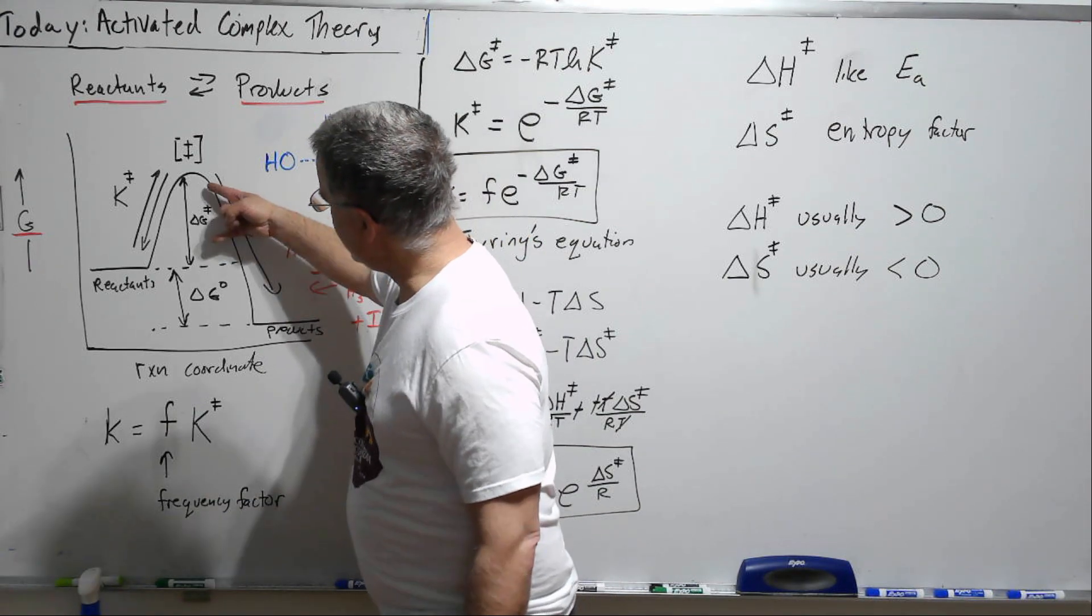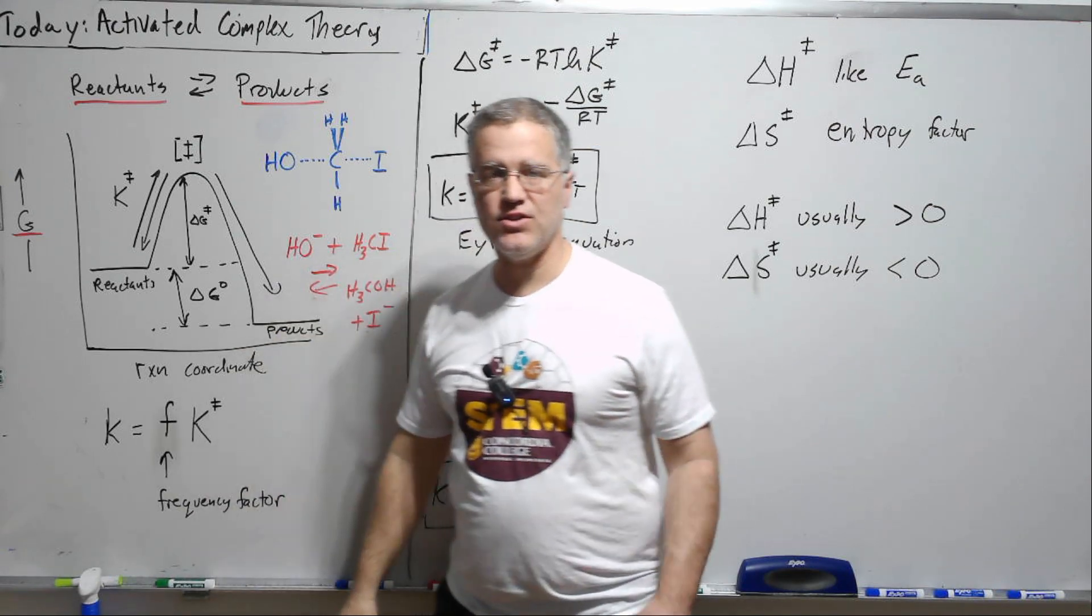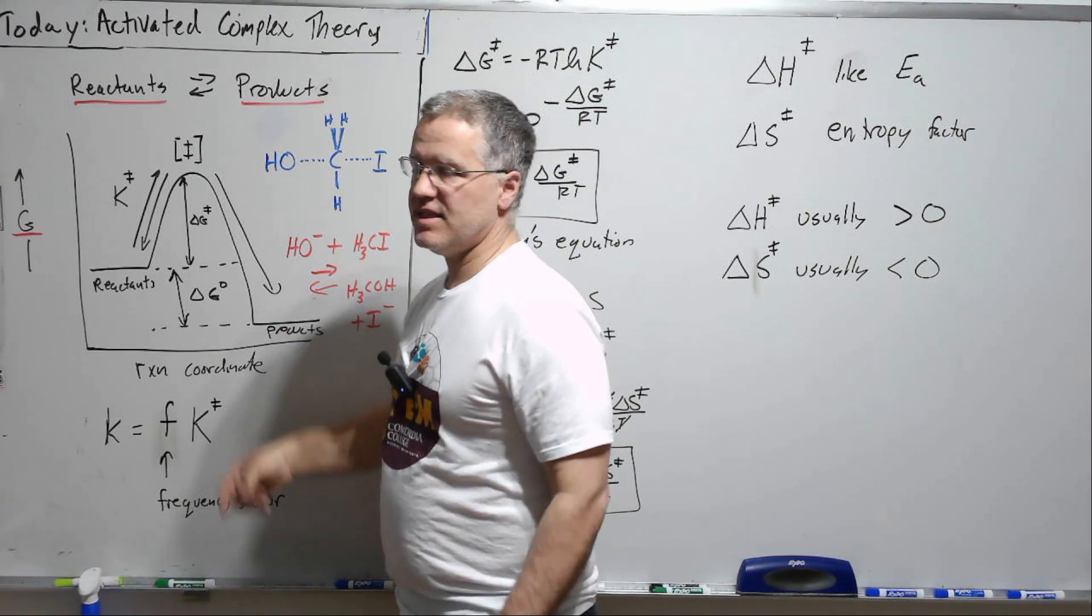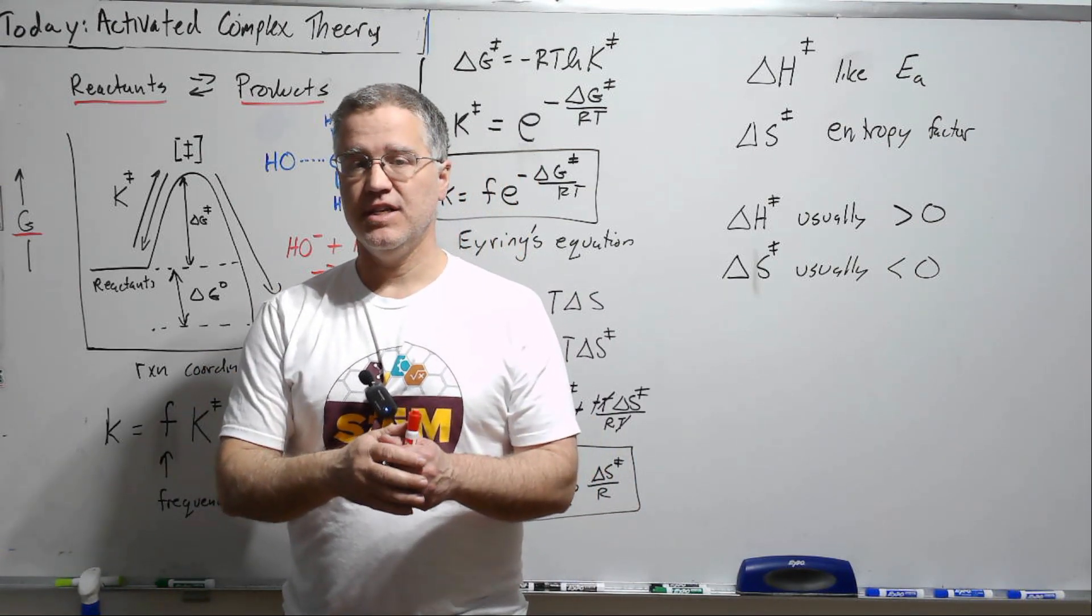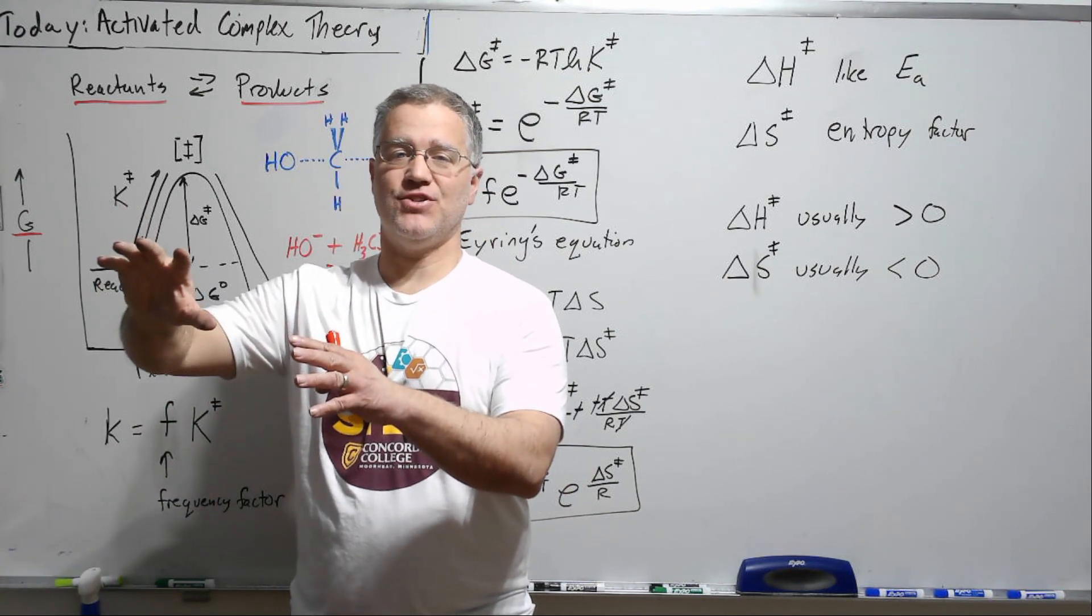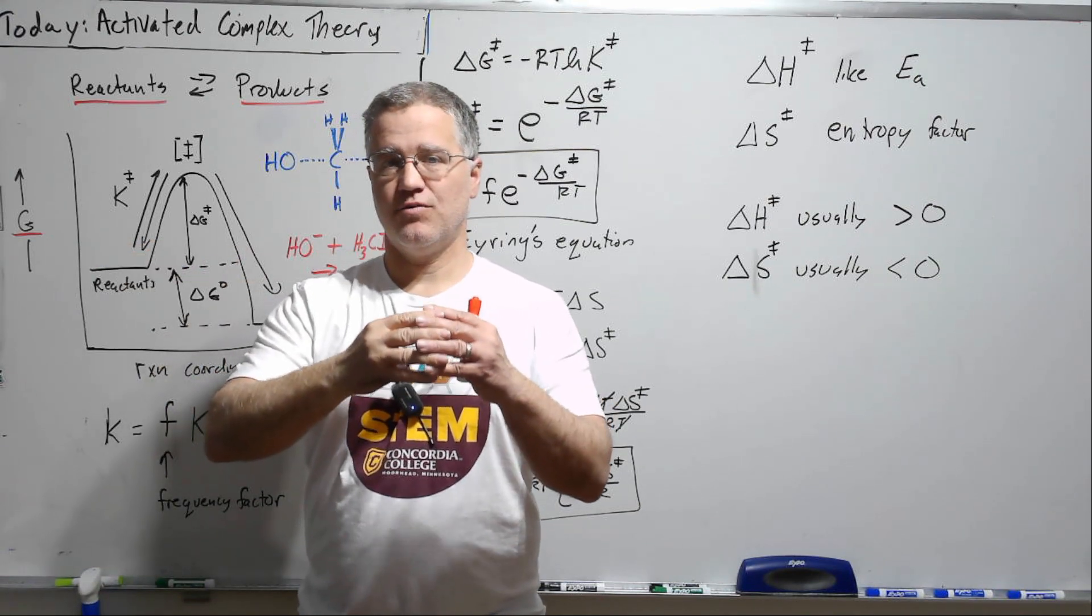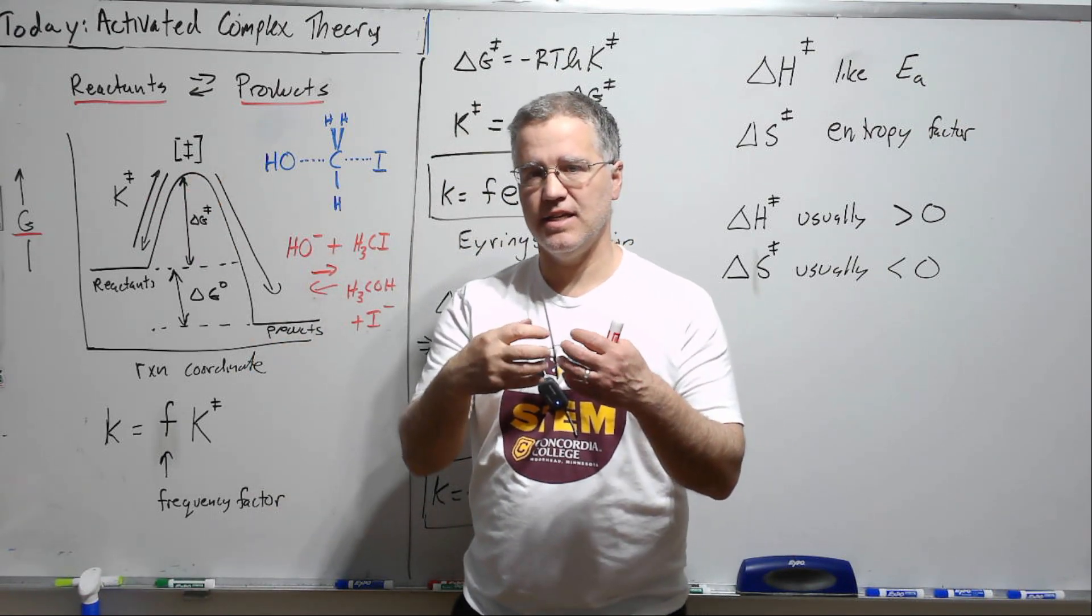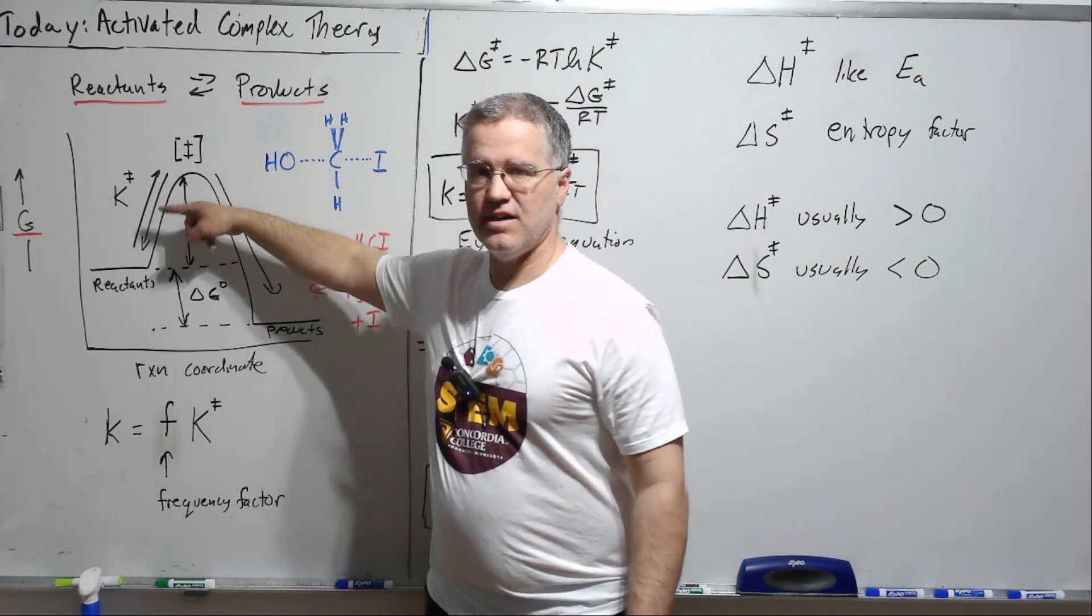But what we do then here is we say this gap from here to here we're going to label that as delta G double dagger as it's called, and the double dagger state is this activated complex state. So what the activated complex is, is actually as far opposite from a stable state as we can be. This is the most unstable state. So we're saying this is the state that represents what the molecule is doing, what the molecules are doing at the highest energy of activation.